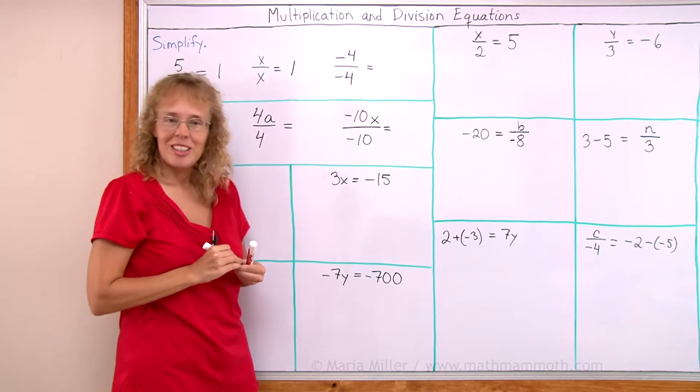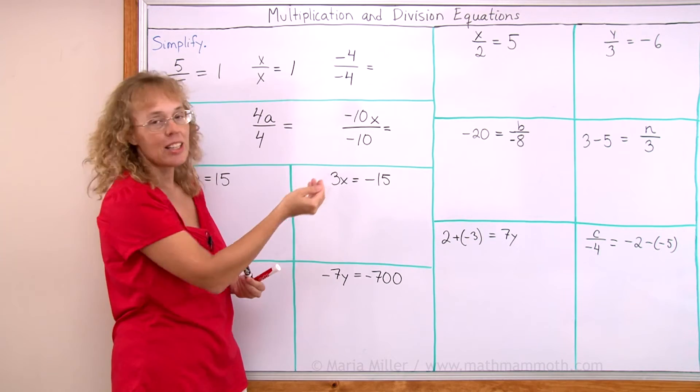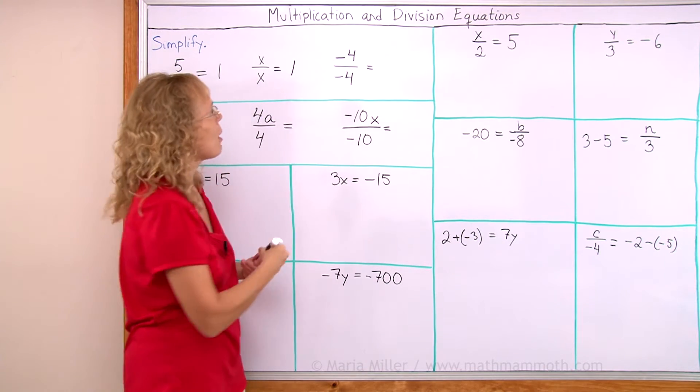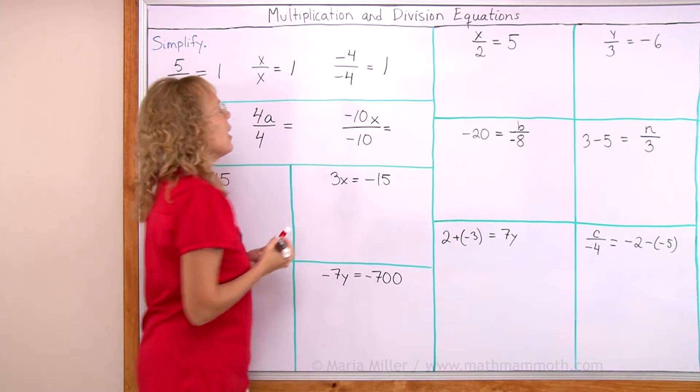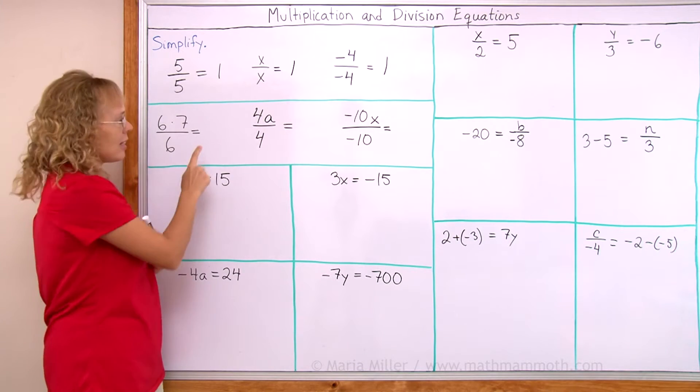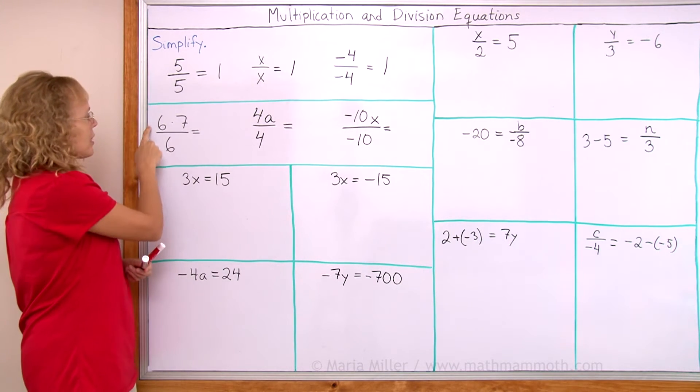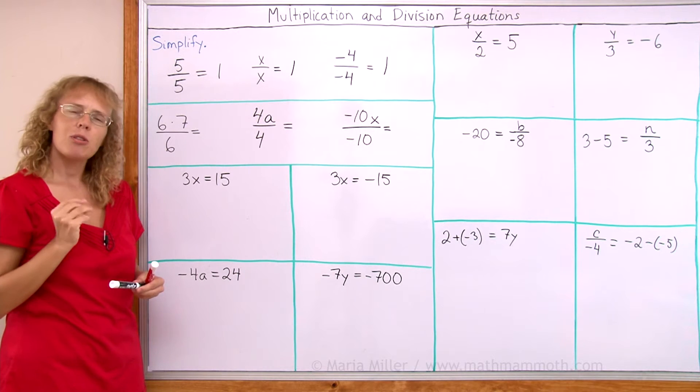And then of course, the same applies if you have a negative number. Negative 4 divided by negative 4 will equal 1. And the way we will use it is in this kind of a context. Let's say you have 6 times 7 divided by 6. What will that be?